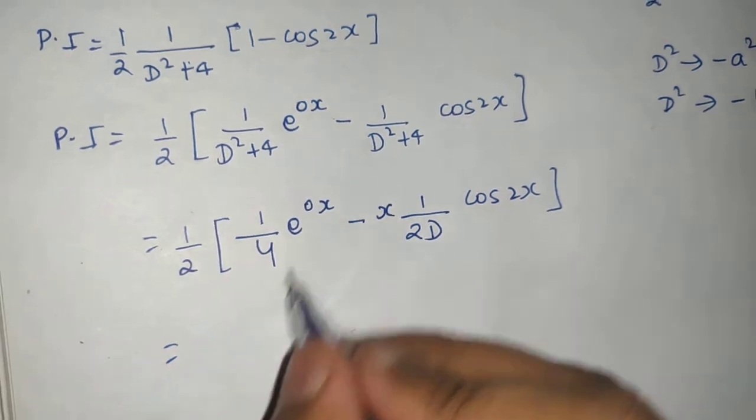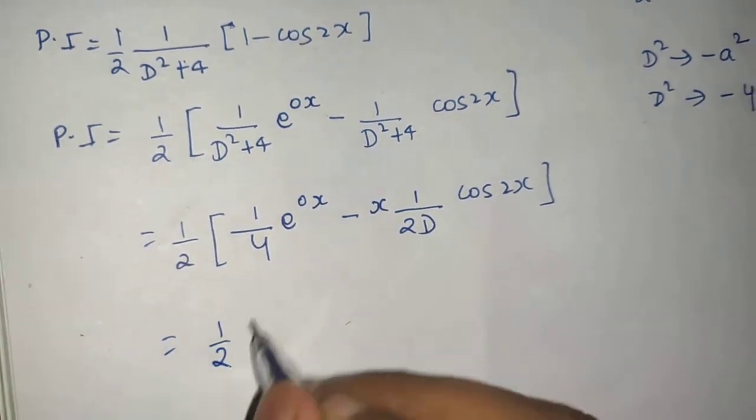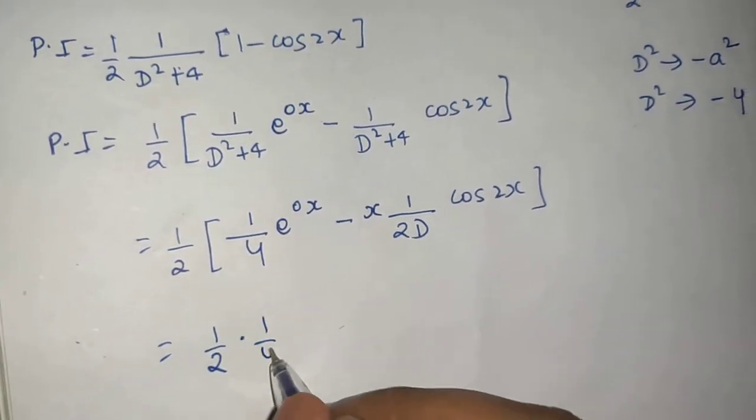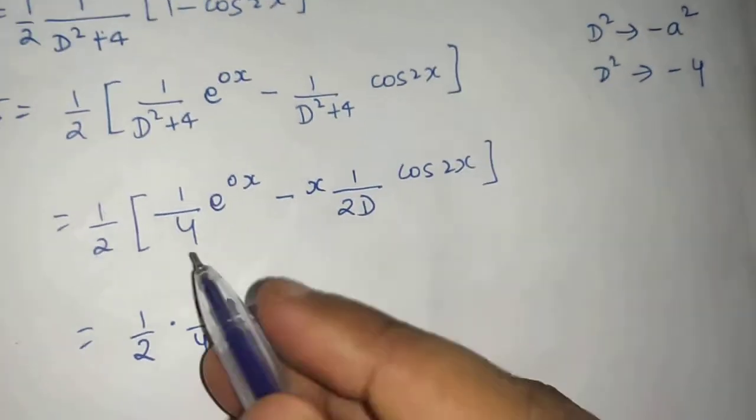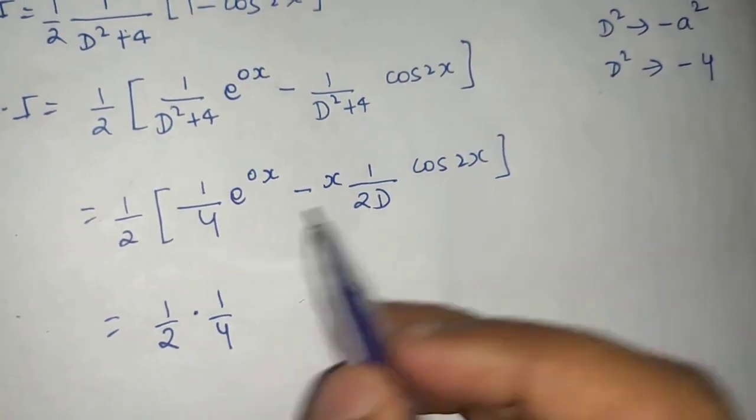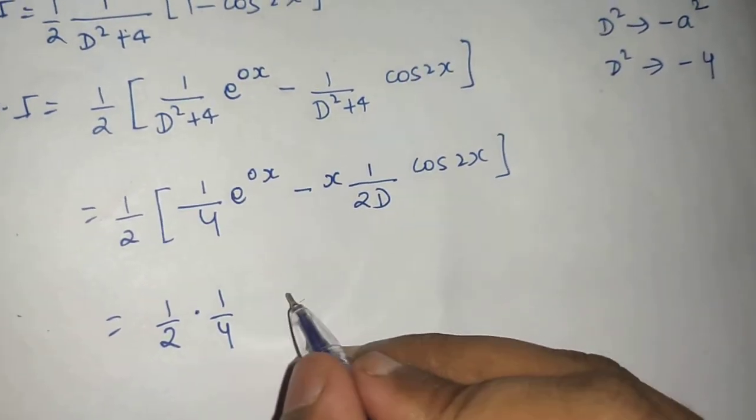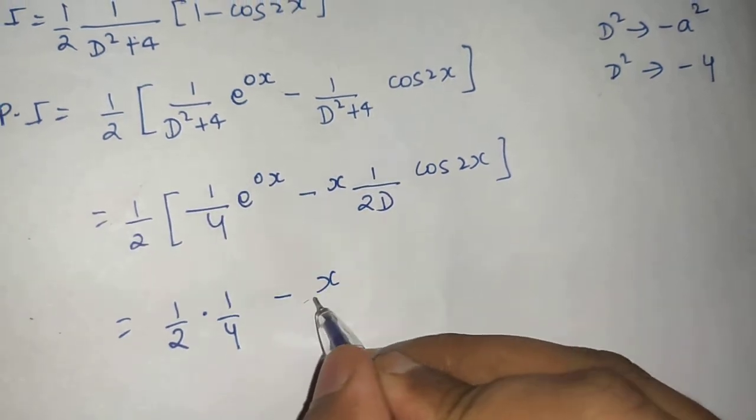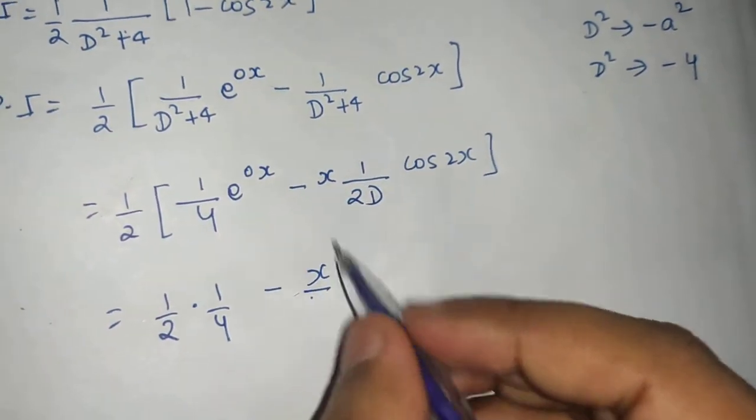So this is e power 0x is 1, so 1 by 2 into 1 by 4. And this half I can take out, so minus x by 4, because this x is outside the operator.